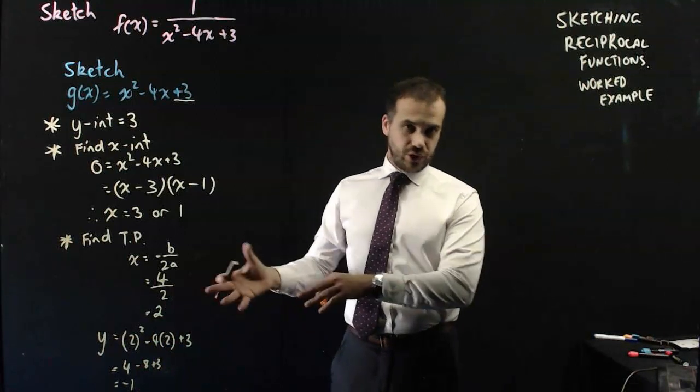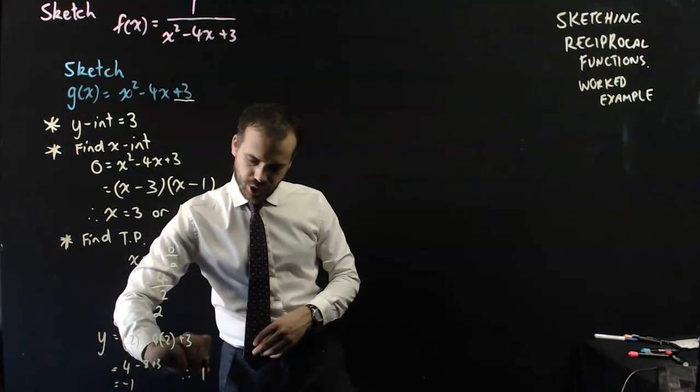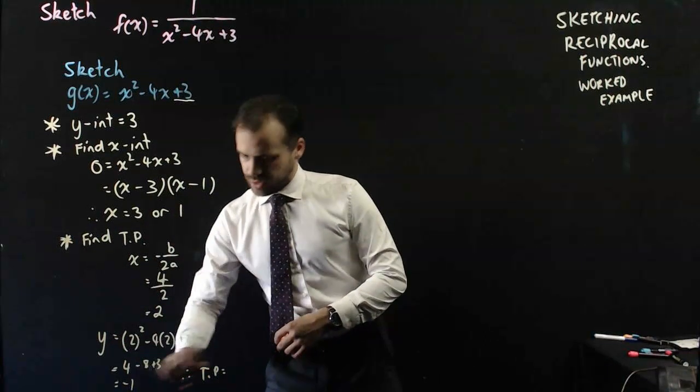we get a turning point, a y-coordinate of a turning point of negative 1, which finally means, therefore, the turning point is equal to 2, negative 1.